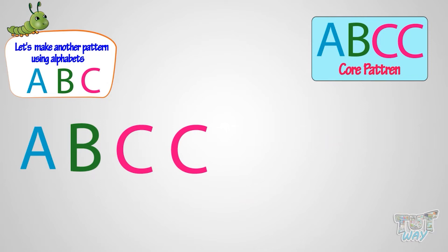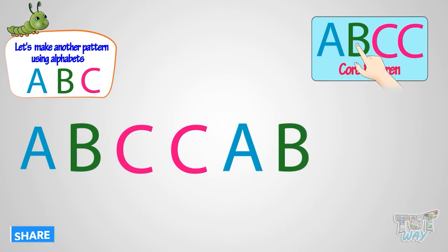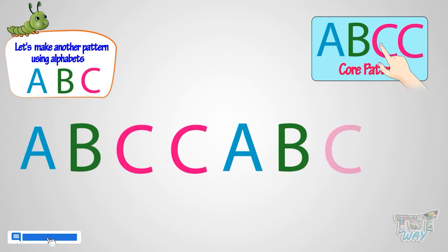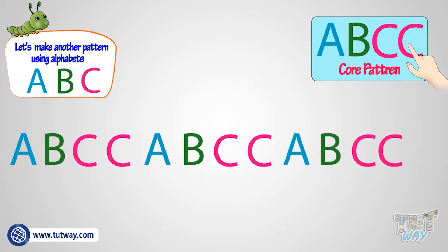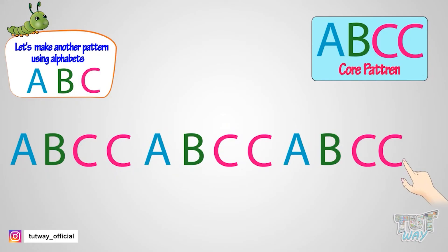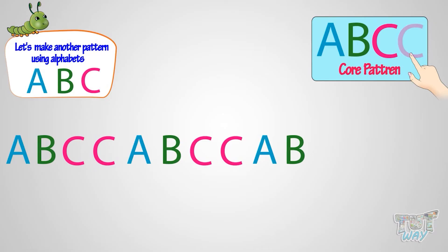Now let's repeat this core pattern to make a bigger pattern. We have to repeat the core pattern — so again A, then B, then C, C. Now can you tell me what will come next? See the core pattern — C, C comes after B, so C, C will come.